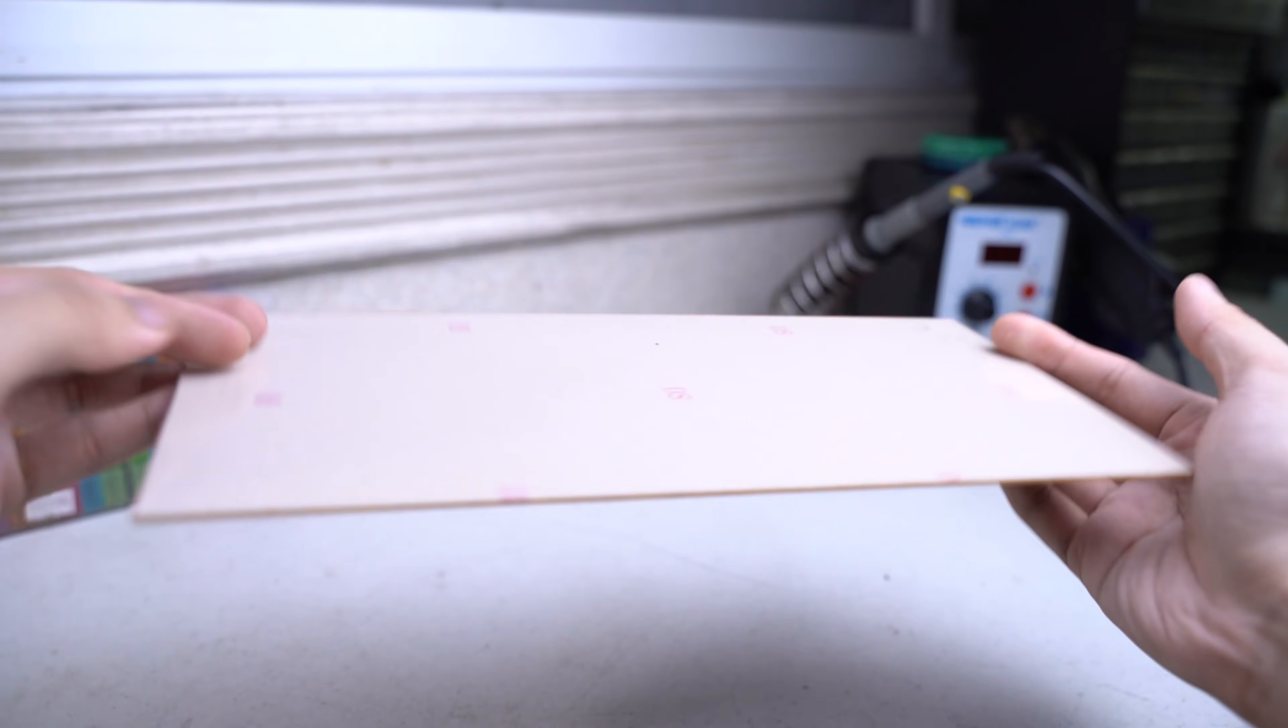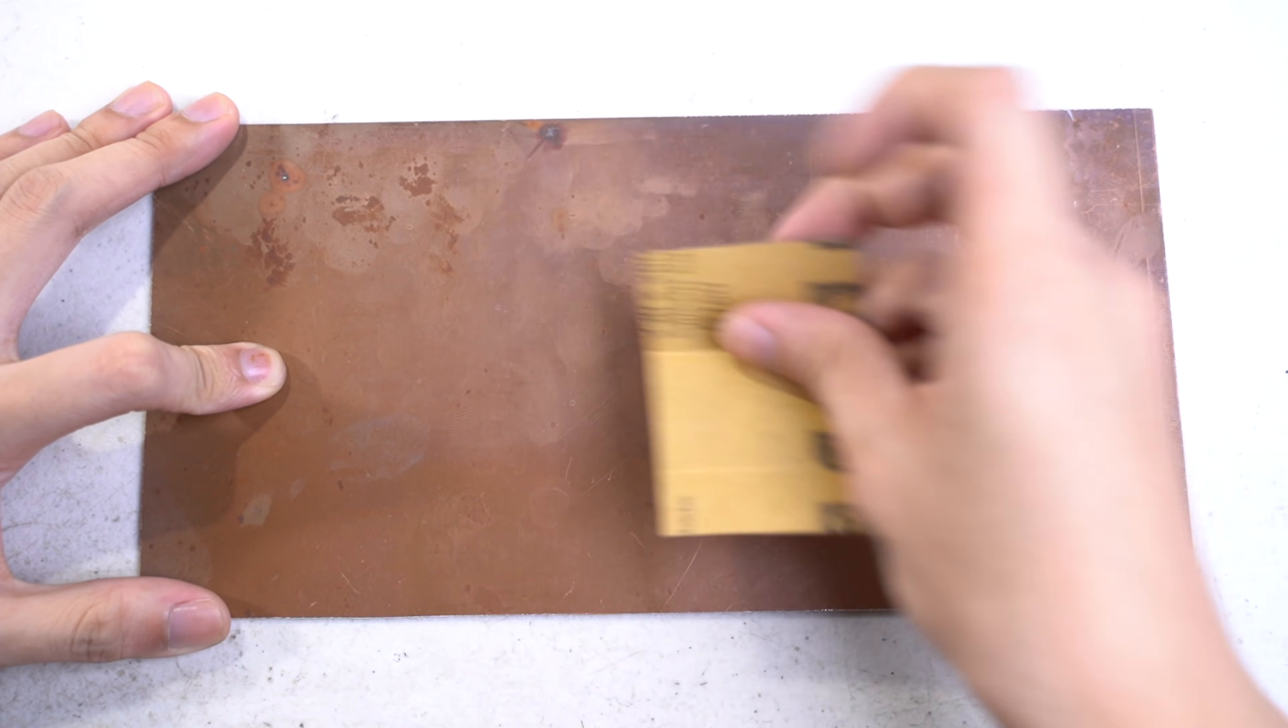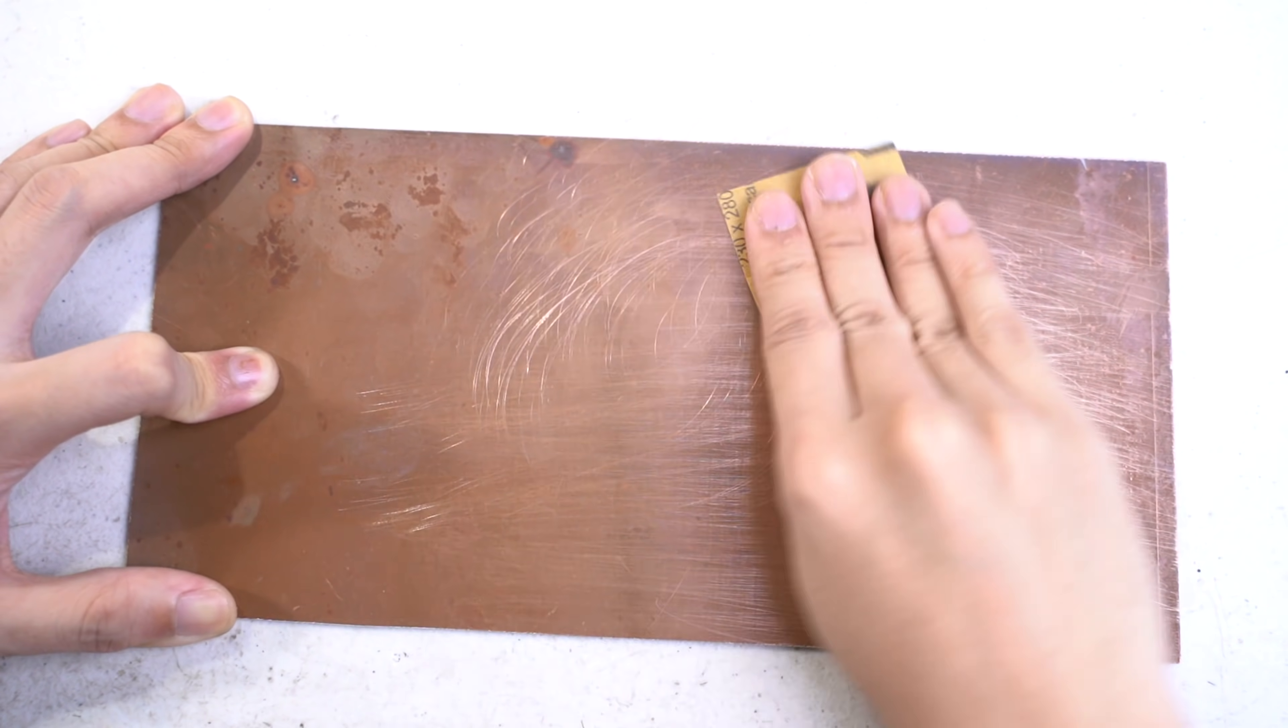Let's start the project by grabbing a bare copper clad. I got this locally from a surplus retailer for around $2. It was oxidized and is in bad condition, so I grabbed a coarse and fine grit sandpaper to clean the board.